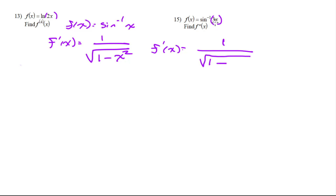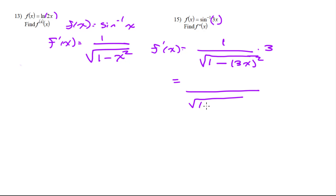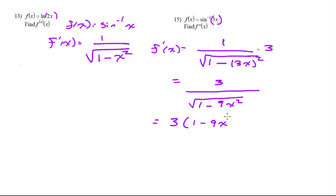Simplifying: 3 over the square root of 1 minus 9x squared. To differentiate again, we rewrite this as 3 times (1 minus 9x squared) to the negative one-half, so we can use the power rule.